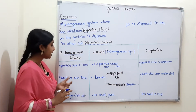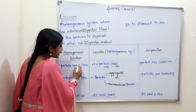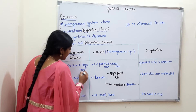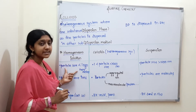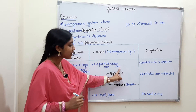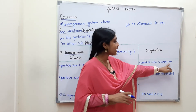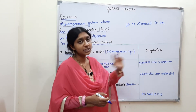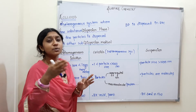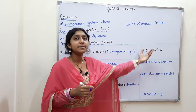The first difference is particle size. For a homogeneous solution, particle size is less than 1 nanometer. For colloids, particle size is between 1 and 1000 nanometers. For suspension, particle size is greater than 1000 nanometers.